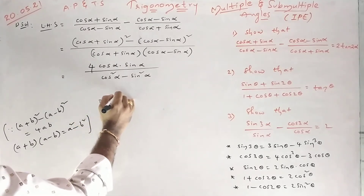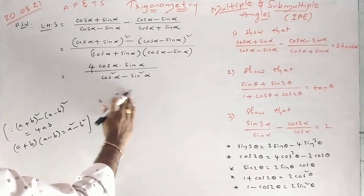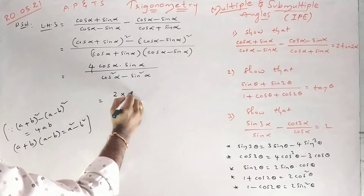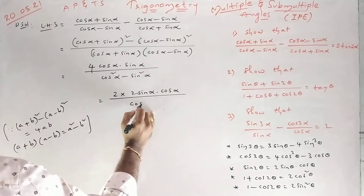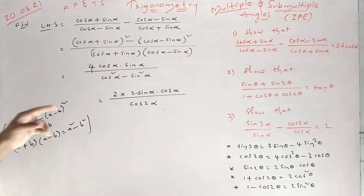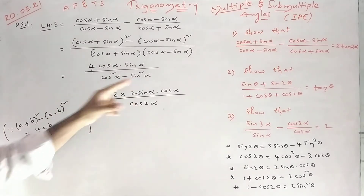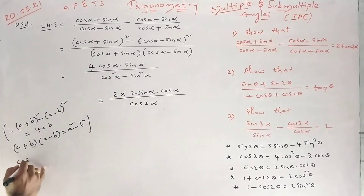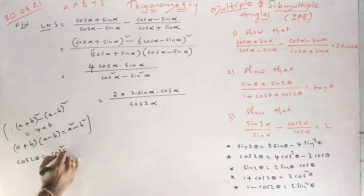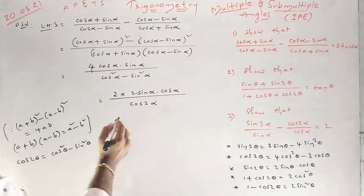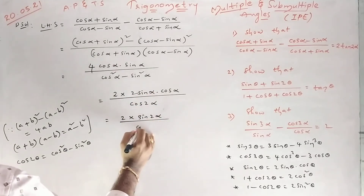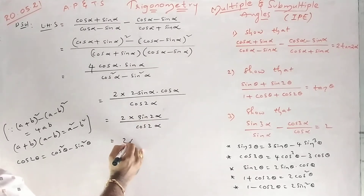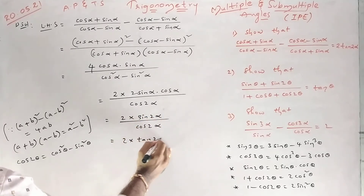For the numerator, I'll write just 2 times 2sinαcosα. This looks like cos2α — the cos2θ formula is cos²θ − sin²θ. Cos2θ has got three formulae, don't forget that. This looks like sin2α over cos2α, which gives tan2α.